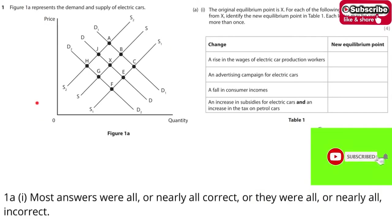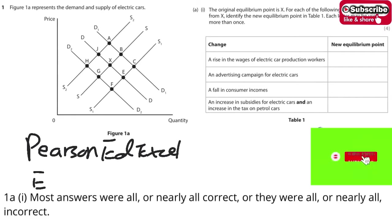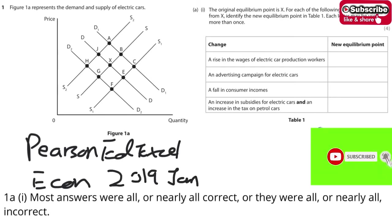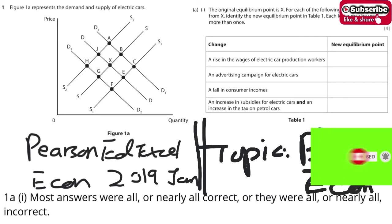So in this video, I've put the question here and the exam report here. This paper is taken from the Pearson exam board, LSL Economics. The paper is from January 2019. Today we'll start with question 1, and the topic for today will be about the basic economic problem.